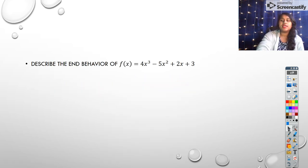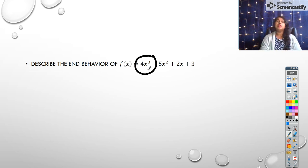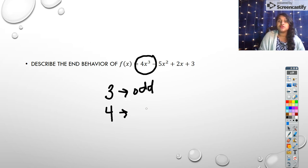Okay. Describe the end behavior of this function. Well, in order to describe end behavior, I have to recognize what's happening. And I'm going to look at the highest degree, which happens to be my first term. So my degree is three, which tells me that it's odd. My coefficient is four, which tells me that it's positive. And remember,